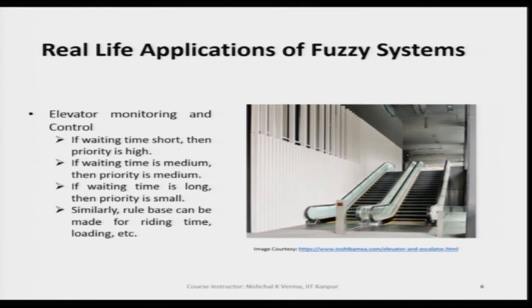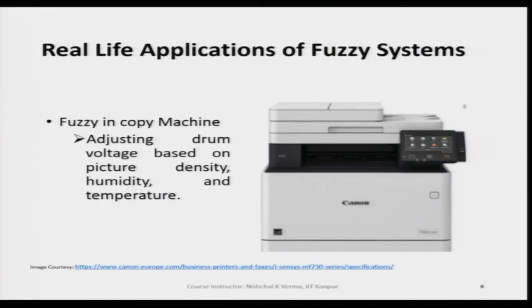Based on that output, further decision is made. Another application is the fuzzy controller based copying machine. In many copying machines, fuzzy controllers are being used and the drum voltage is adjusted based on picture density, humidity, and temperature. The variation of these parameters are coarse linguistic terms — humidity can be 'low', 'medium', 'high' — and based on that the controller makes the decision.